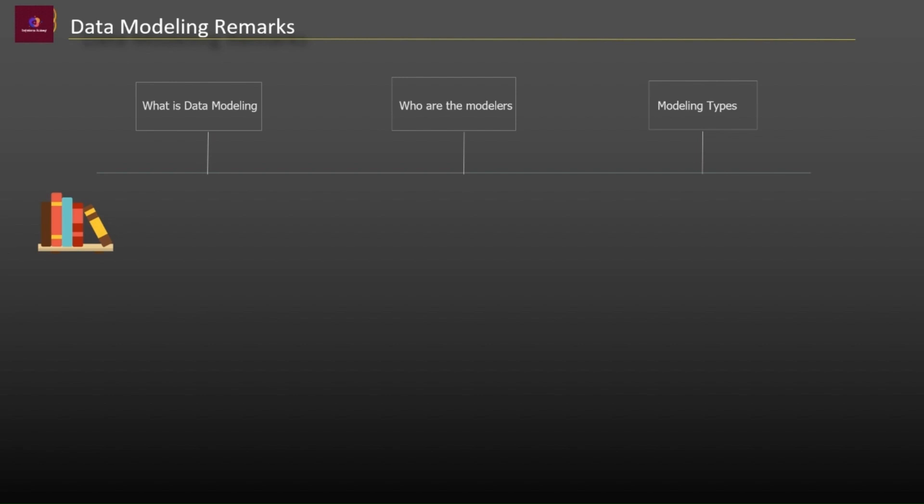For example, historical books are all in the same area and novels are collected together so we can organize them in a way that we can easily find the correct book that we are looking for. Similarly, if you have a massive amount of data, we need a system or method to keep everything in order. The process of sorting and storing data is called Data Modeling.